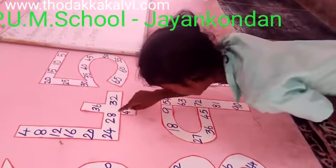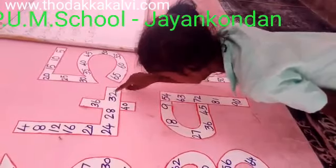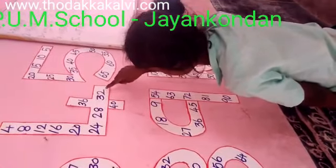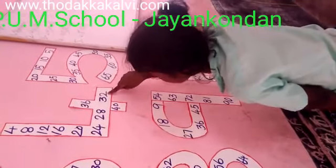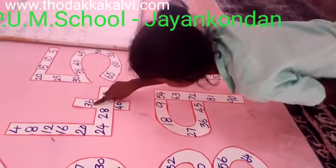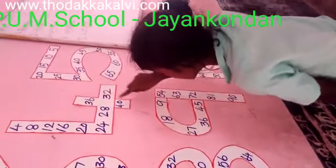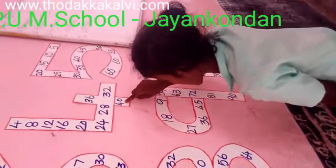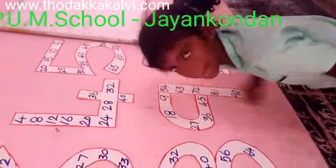7, 4's are 28. 8, 8, 4's are 30. 9, 4's are 36. 10, 4, 10, 4's are 40.